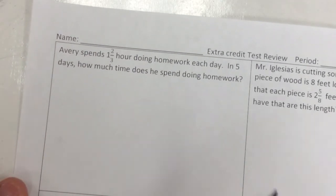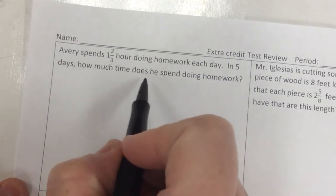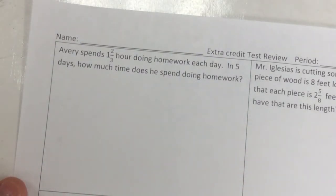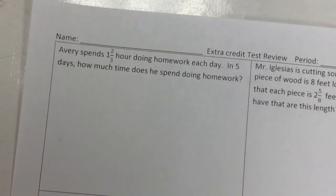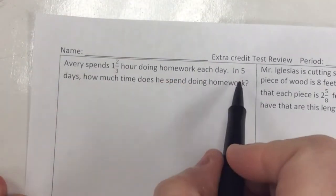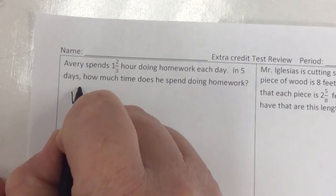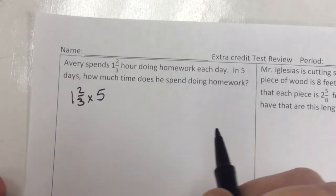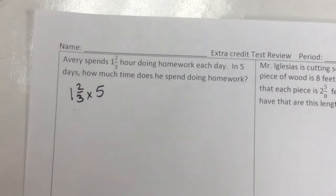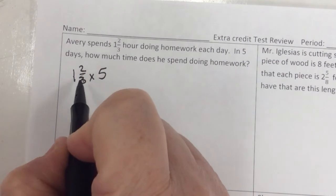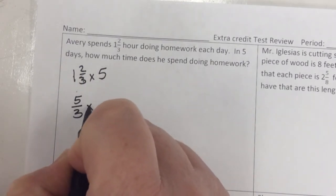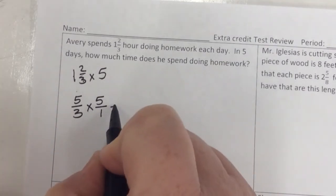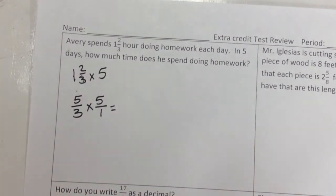Next question. We're going to speed this up a little bit for you so your video is not too long. This is division. Oh, no. It's multiplication. Avery spends 1 and 2/3 hour doing homework each day. In 5 days, how much time does he spend doing homework? So I know it's multiplication because I can add the same thing over and over here. If I can add it 5 times. So 1 and 2/3 times 5. I can have no whole numbers and no mixed numbers in my fractions. So 3 times 1 is 3 plus 2 is 5/3 times 5/1. I'm going to let you solve that so we can get through a little bit more here.